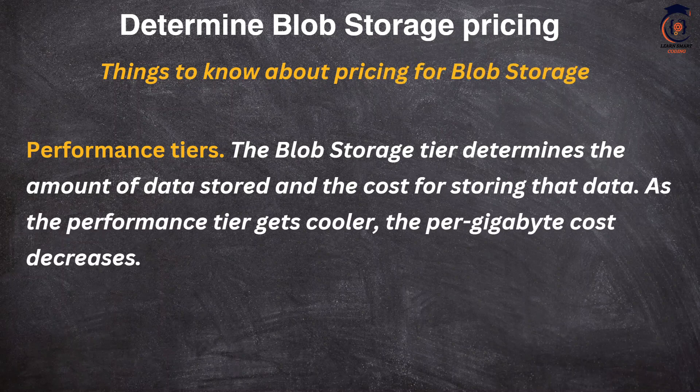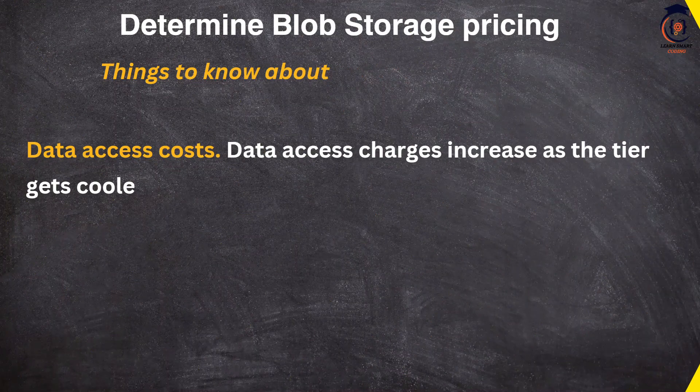The first factor is the performance tier — hot, cool, cold, and archive. The blob storage tier determines the amount of data stored and the cost for storing that data. As the performance tier gets cooler, the per-gigabyte storage cost decreases. For example, if you store a movie in the hot tier it costs more, but if that movie is not accessed frequently, you can move it to cool or cold and reduce your storage cost.